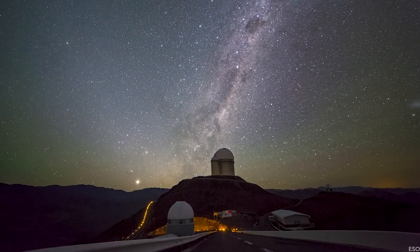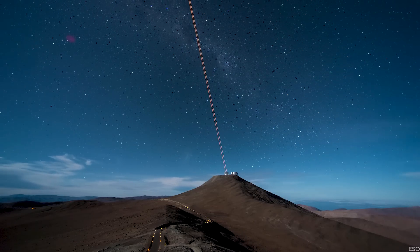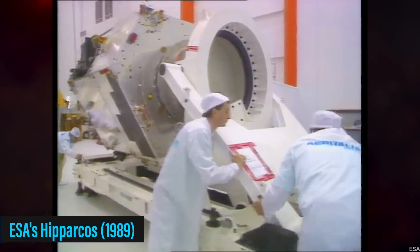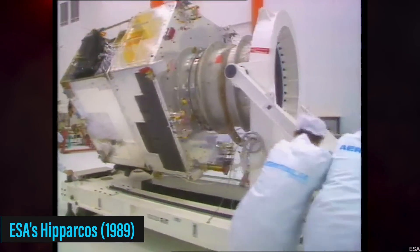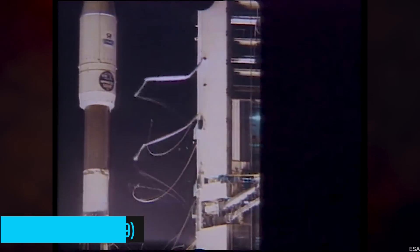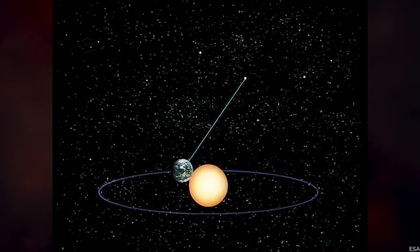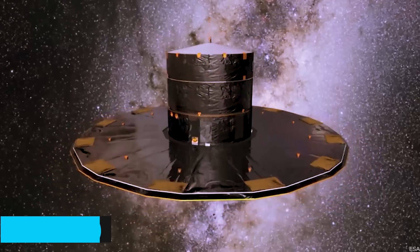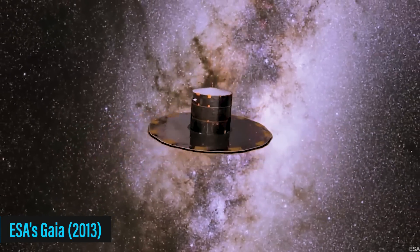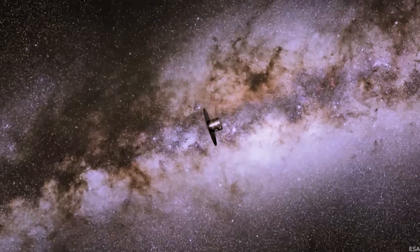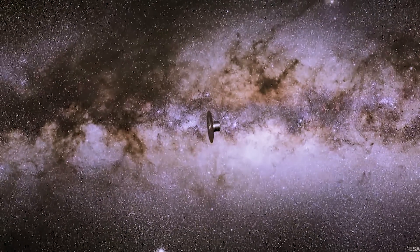Several missions and instruments have been instrumental in our search for the oldest stars and estimating the universe's age. For instance, there's the ESA's Hipparcos, launched in 1989. This satellite measured the distance and motions of about 120,000 stars in our galaxy. Then there's Gaia, another ESA mission launched in 2013, taking things to a whole new level by measuring the distances and motions of around 1 billion stars.